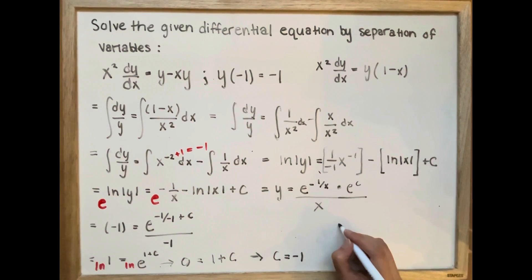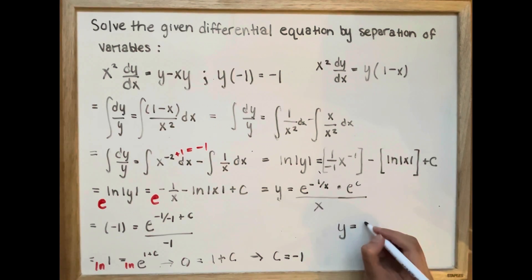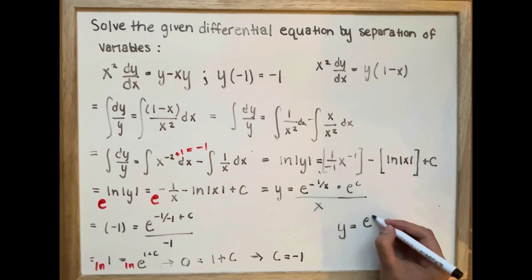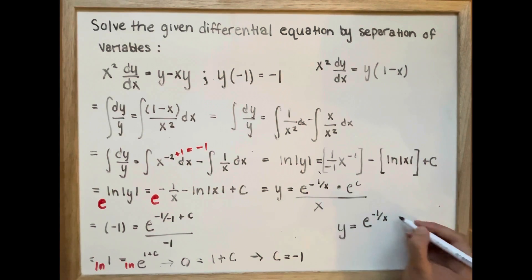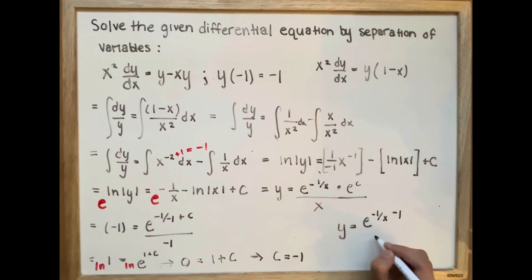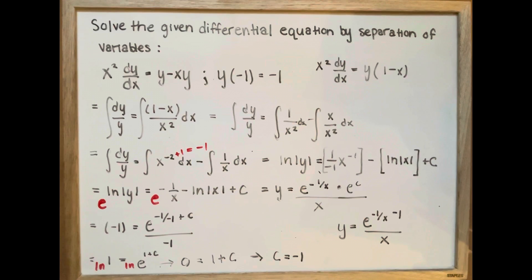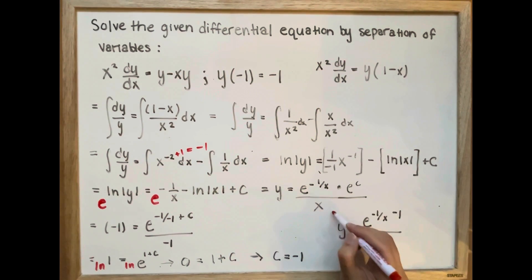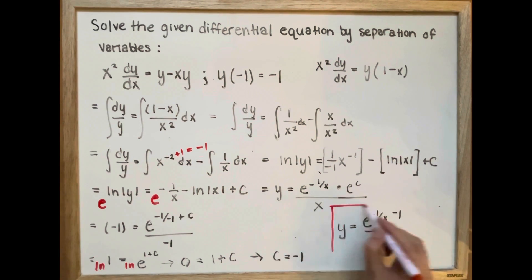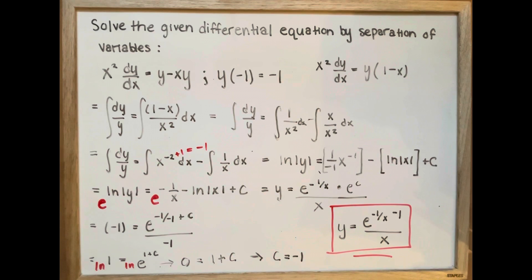We can rewrite this, and y is going to equal e to the power of negative 1 over x, minus 1, all over x. This is our final answer. Thank you for watching.